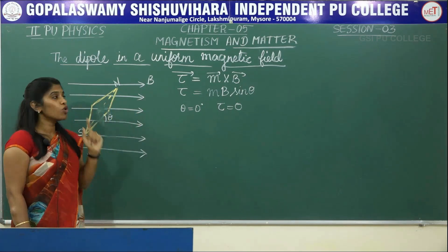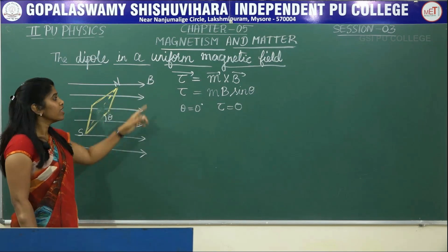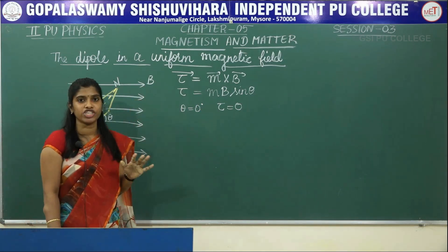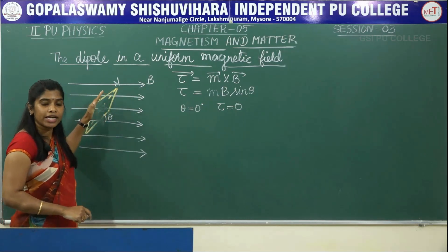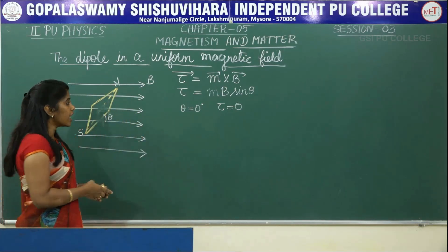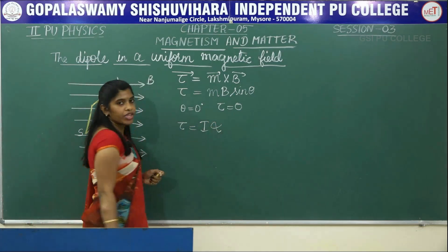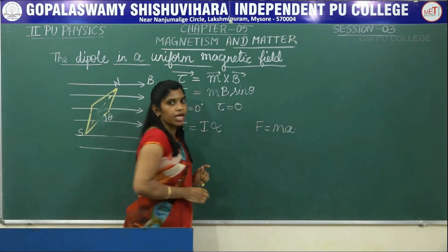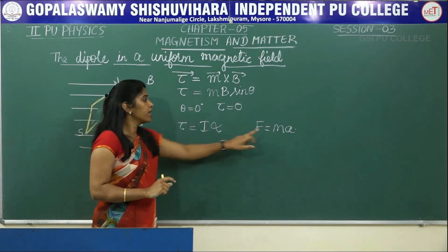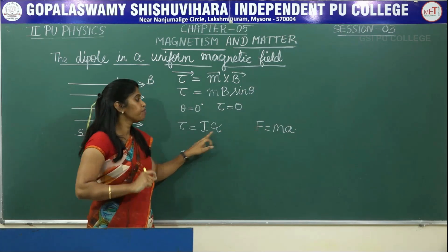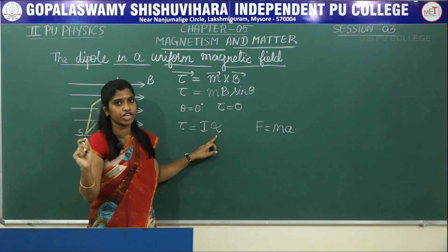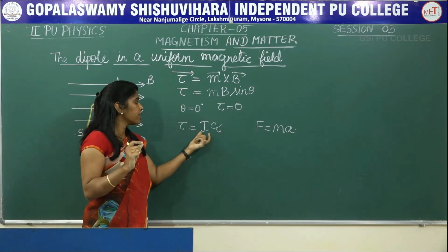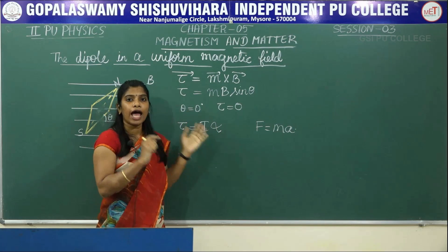Here I can see two types of torque. One is the restoring torque, which tries to bring the magnetic needle to its equilibrium position. There is also a torque due to acceleration, given by I alpha — this is similar to F = MA, where torque replaces force, moment of inertia I replaces mass, and alpha (angular acceleration) replaces linear acceleration.